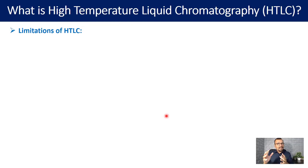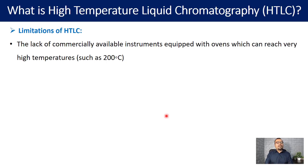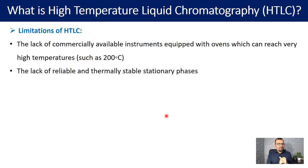Having said that, there are certain limitations of the HTLC technique. The first is the lack of commercially available instruments equipped with ovens that can reach very high temperatures such as 200 degrees Celsius — this can stop you from conducting high temperature liquid chromatography. The second important limitation is the stability of the stationary phases. Bonded silica stationary phases have significant temperature limitations; some may not withstand temperatures beyond 80 degrees Celsius.